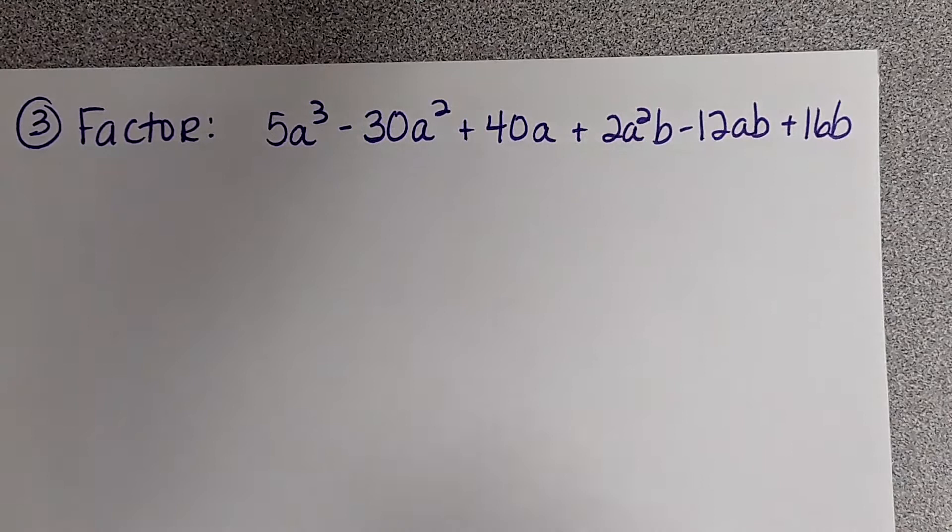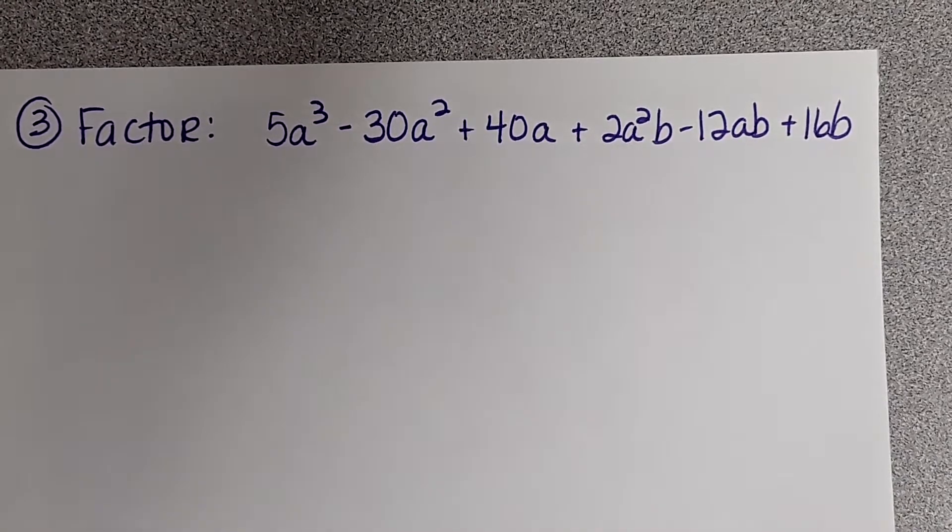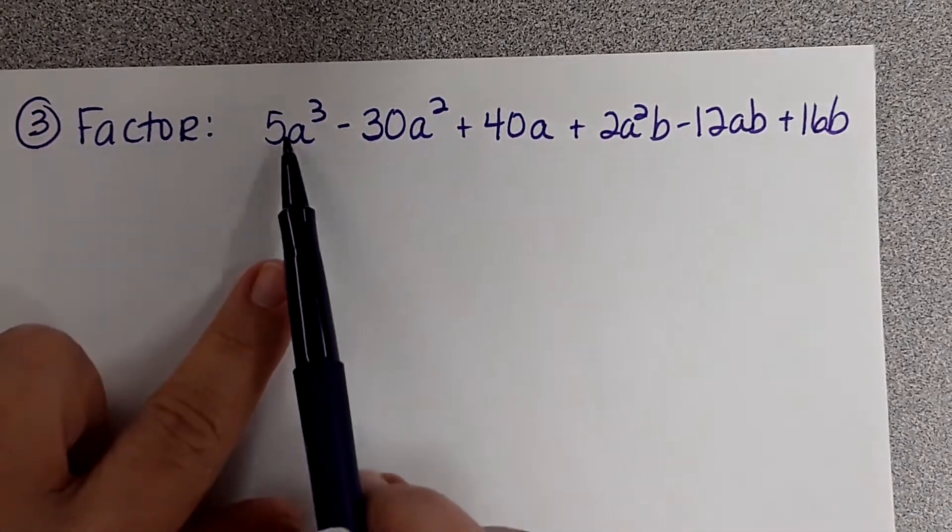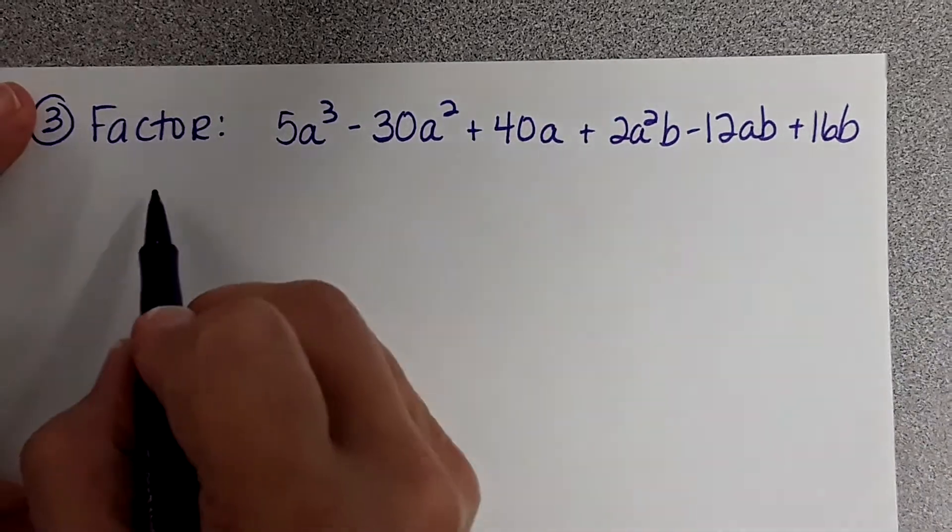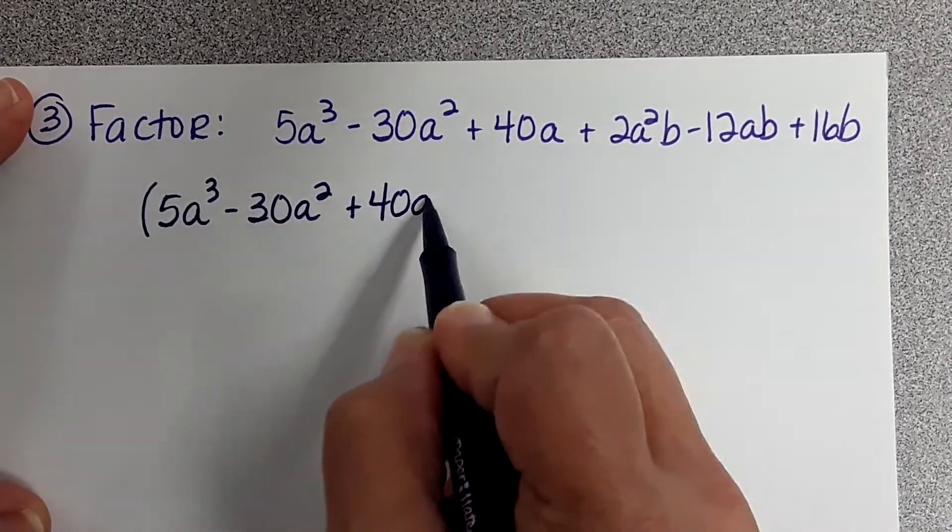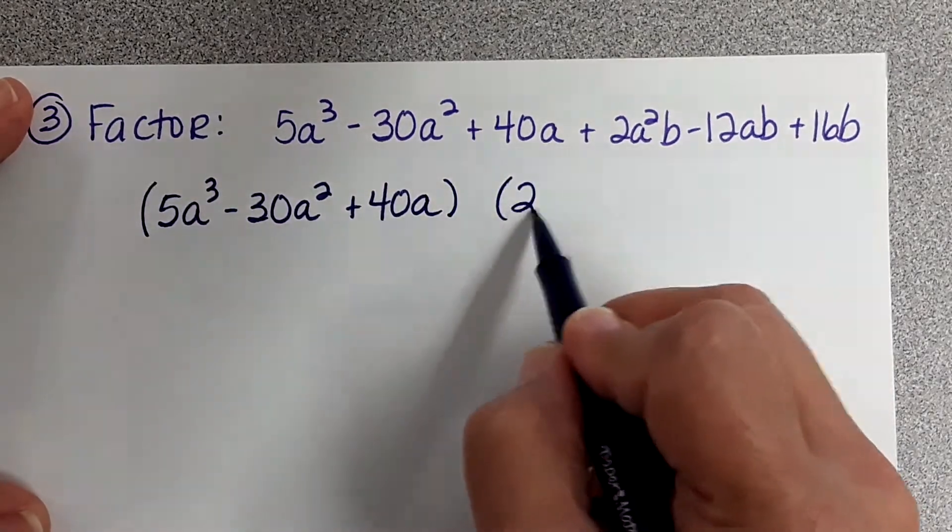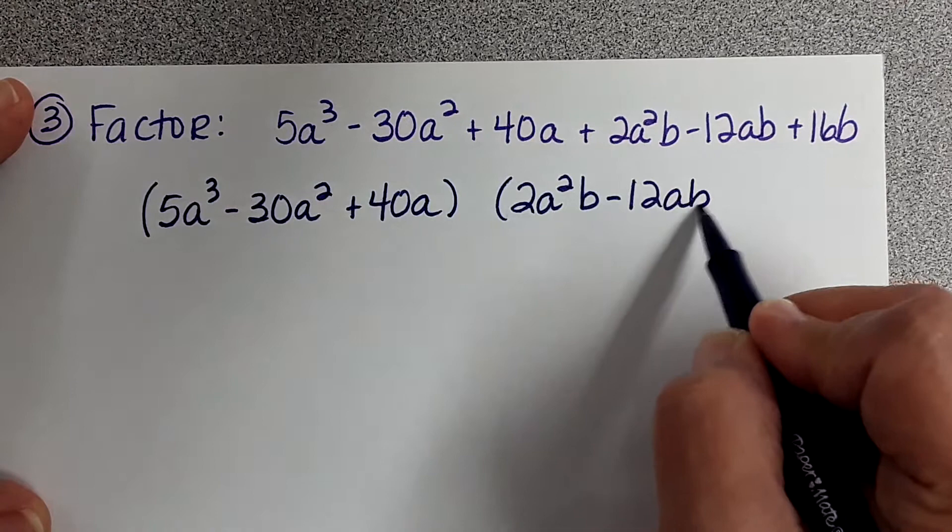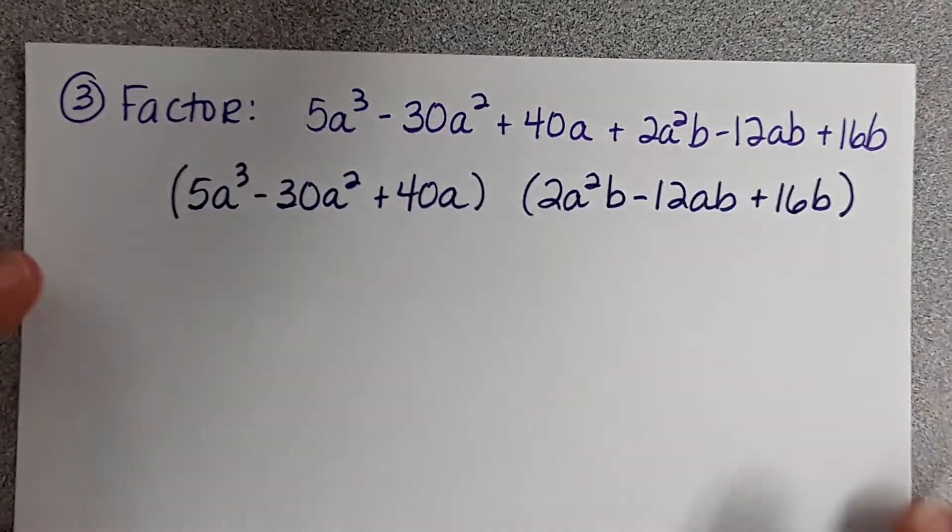So when you looked at this problem, how many of you said, I'm going to wait until she does it for us? You guys at home, how many of you thought, I'm not doing that problem? So when you look at this problem, it's going to be a factor by grouping. What we're going to do is look at the first three terms, and then we're going to look at the second three terms. We are going to group the first three terms together, then we're going to group the last three terms together.